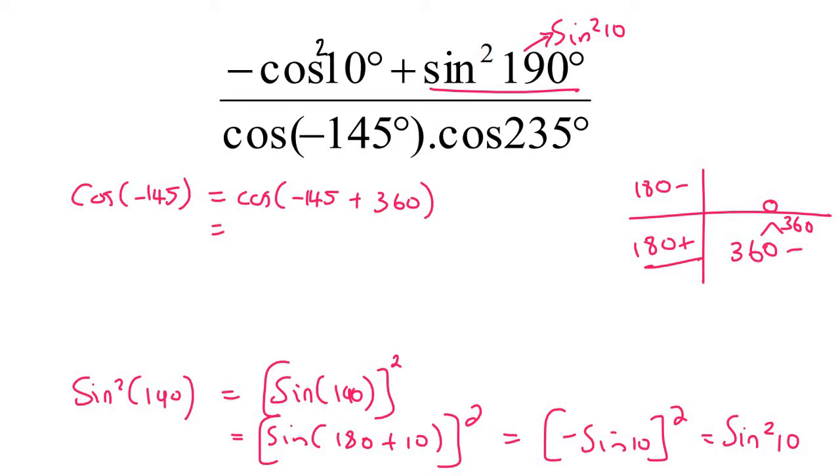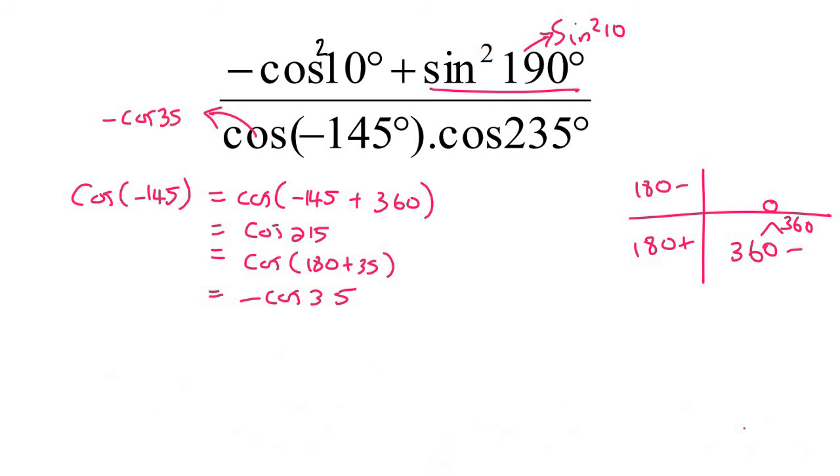And that's going to give us cos of 215 degrees. And then cos of 215 can be rewritten as 180 plus. And then this just becomes negative cos 35.